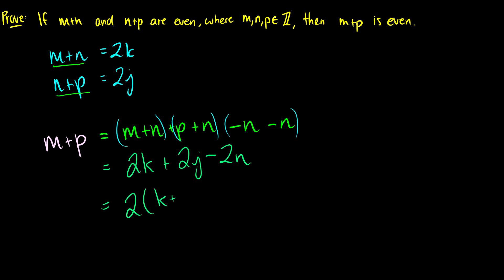So this is 2 times k plus j minus n. So we know that m plus p is 2 times something. So this means that m plus p is even. So we're done. That's a nice trick you can do there.